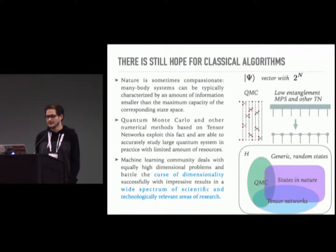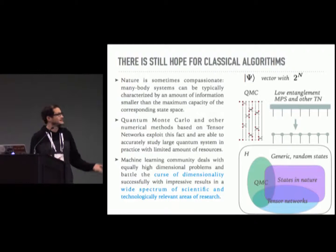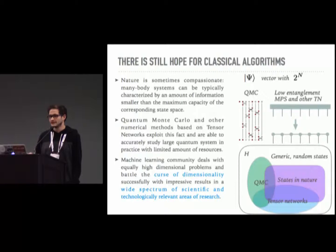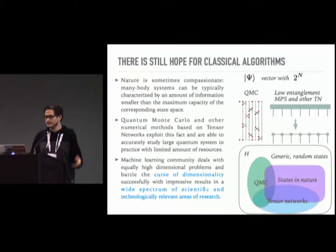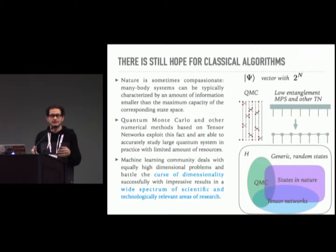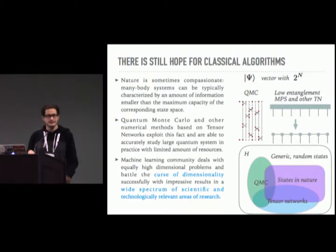There's still hope for classical algorithms, because many-body systems can typically be characterized by an amount of information smaller than the maximum exponential capacity. That's what we exploit when we study quantum many-body systems using quantum Monte Carlo simulations or tensor networks. In QMC, we sample the state space stochastically and still get pretty accurate correlation functions, even though the system is described by an exponentially huge amount of information.